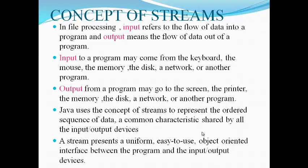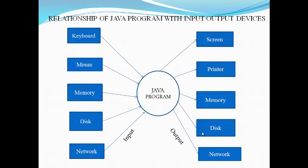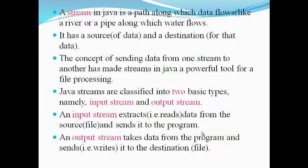Java uses the concept of streams to represent the ordered sequence of data, a common characteristic shared by all input-output devices. A stream presents a uniform, easy-to-use, object-oriented interface between the program and the input-output devices. A stream in Java is a path along which data flows, like a river or a pipeline along which water flows. It has a source and a destination. The concept of sending data from one stream to another has made streams in Java a powerful tool for file processing.